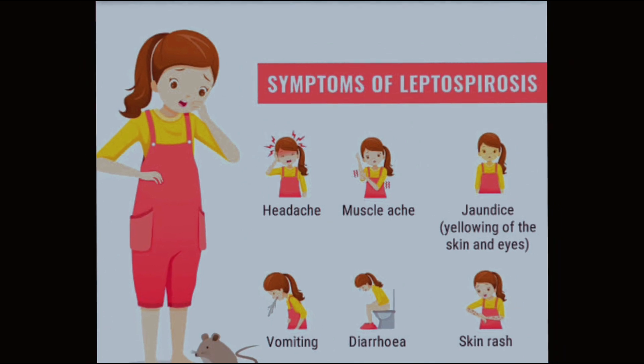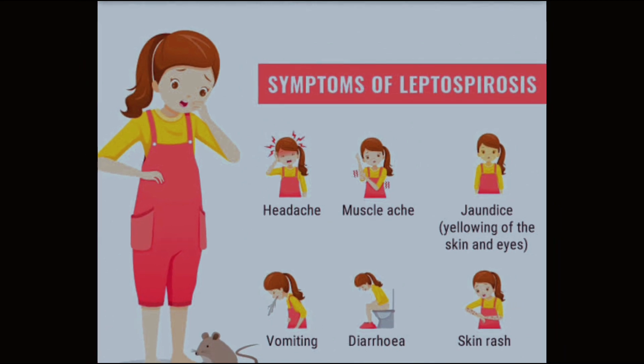These are the symptoms of Leptospirosis. Number 1, headache. Number 2, muscle ache. Number 3, jaundice, or yellowing of the skin and eyes. Number 4, vomiting. Number 5, diarrhea. And number 6, skin rash.